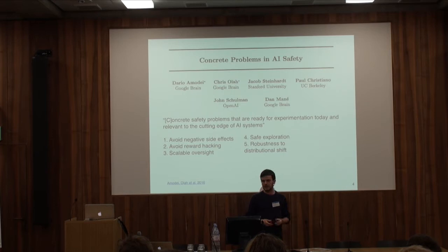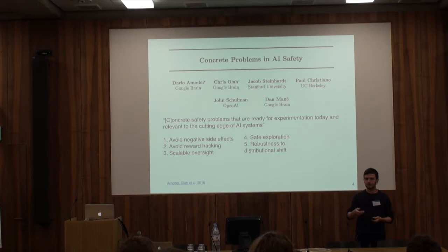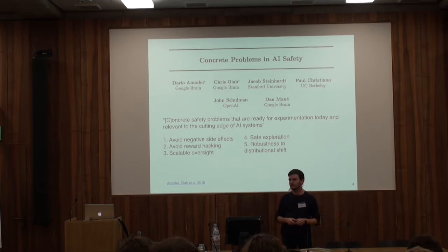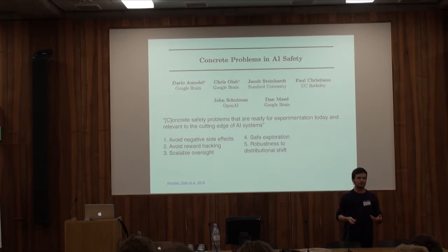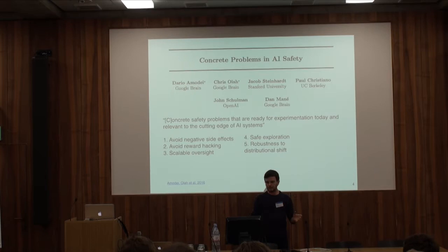The third problem is scalable oversight. Sometimes you might want to have humans in the loop because some decisions are so high-stakes that we don't want to leave them entirely to the agent. But we can't have humans giving feedback on every single decision — the point of AI is to increase our effectiveness. So the question is: are there ways to give very scarce human feedback that still makes the agent learn important aspects of its policy?